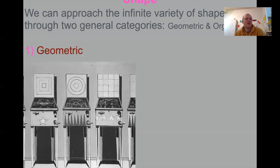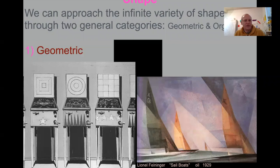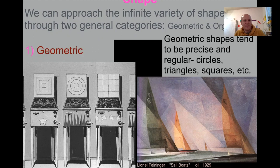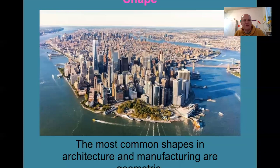We can approach shape in two ways. We can think of shape as geometric — like squares, circles, rectangles, hard-edge shapes. Precise, regular circles, triangles, squares, etc. Shapes are what we build with, and geometric shapes are what we build with most often. Architecture and manufacturing are usually geometric shapes — all these buildings are essentially almost all rectangles.